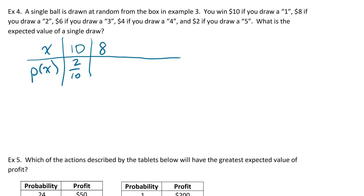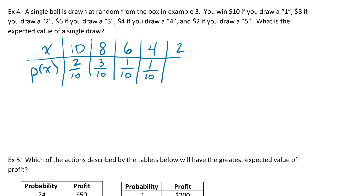Then $6 if you draw a 3, with probability 1/10; $4 if you draw a 4, with probability 1/10; and $2 if you draw a 5, with probability 3/10. All of those probabilities are just coming from example 3, so we're not creating new ones.